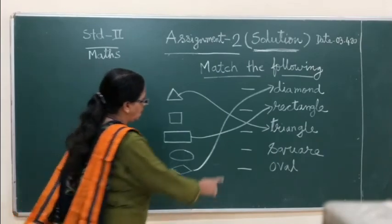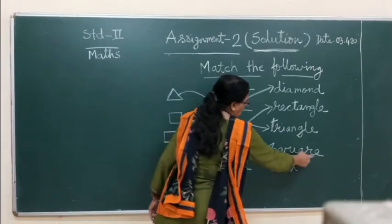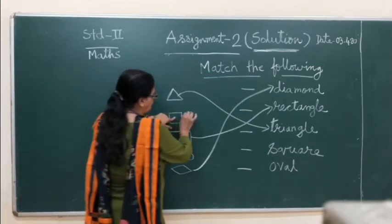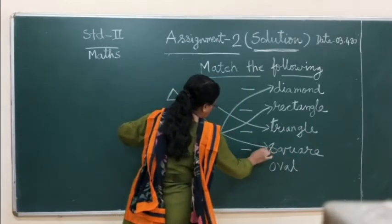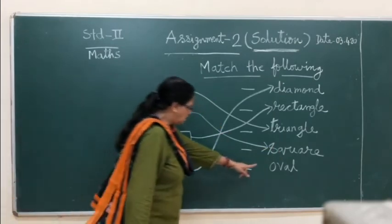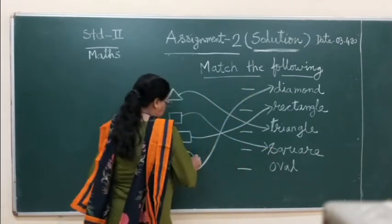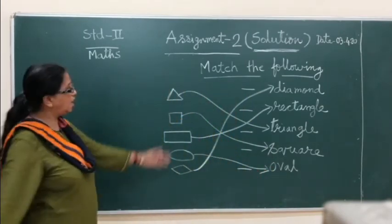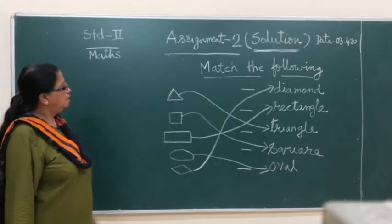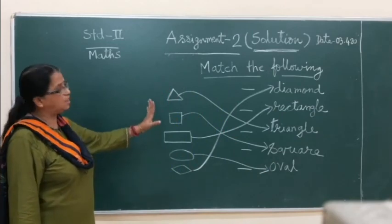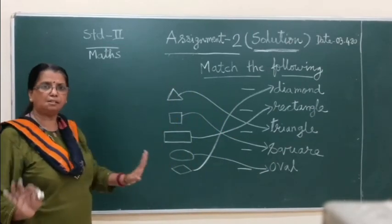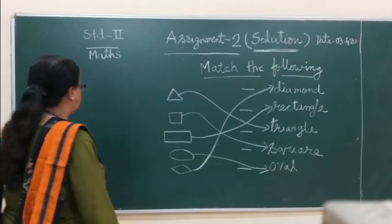Now S-Q-U-A-R-E, square. This is square. So we match like this way. Now O-V-A-L, oval. Here, children. Hope you have understood everything here. So we solved all of assignment number 2. Goodbye everyone.